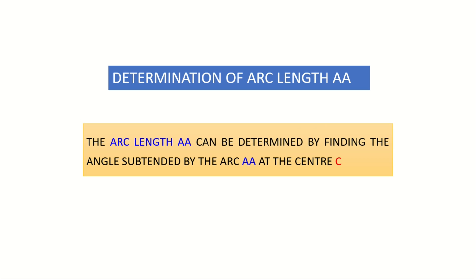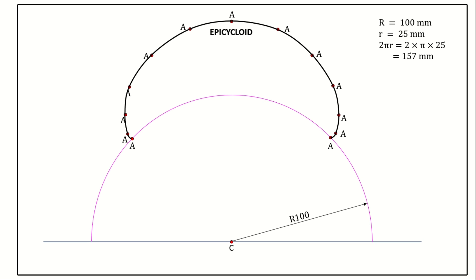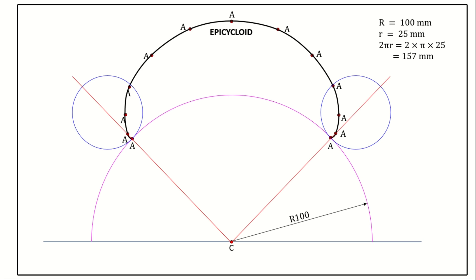Determination of arc length AA. The arc length AA can be determined by finding the angle subtended by the arc AA at centre C. The arc length AA is equal to 157 millimeters. We cannot measure this length directly using a scale, so we find the angle instead. The formula is r·θ = 2πr, therefore θ = 2πr / R.